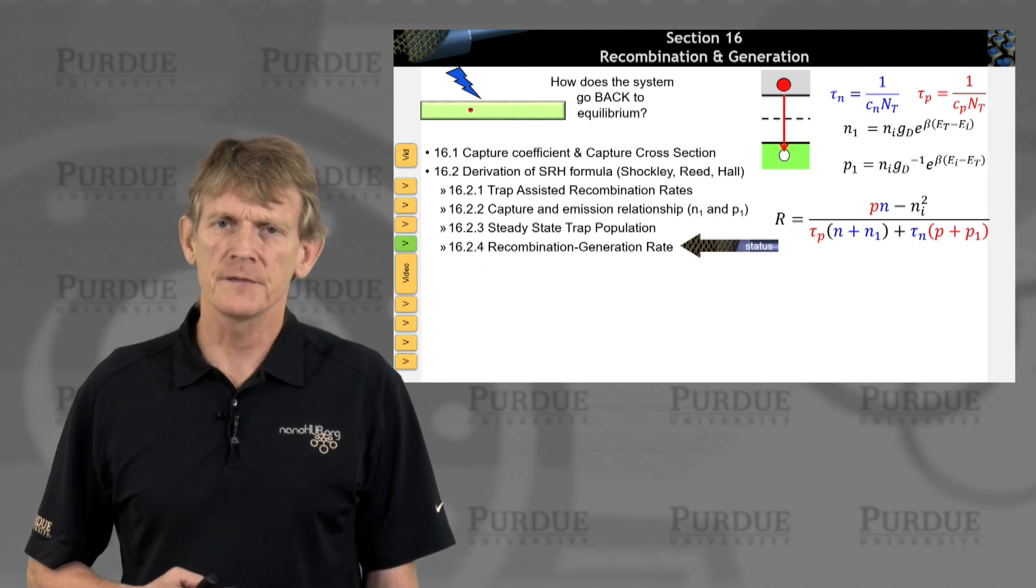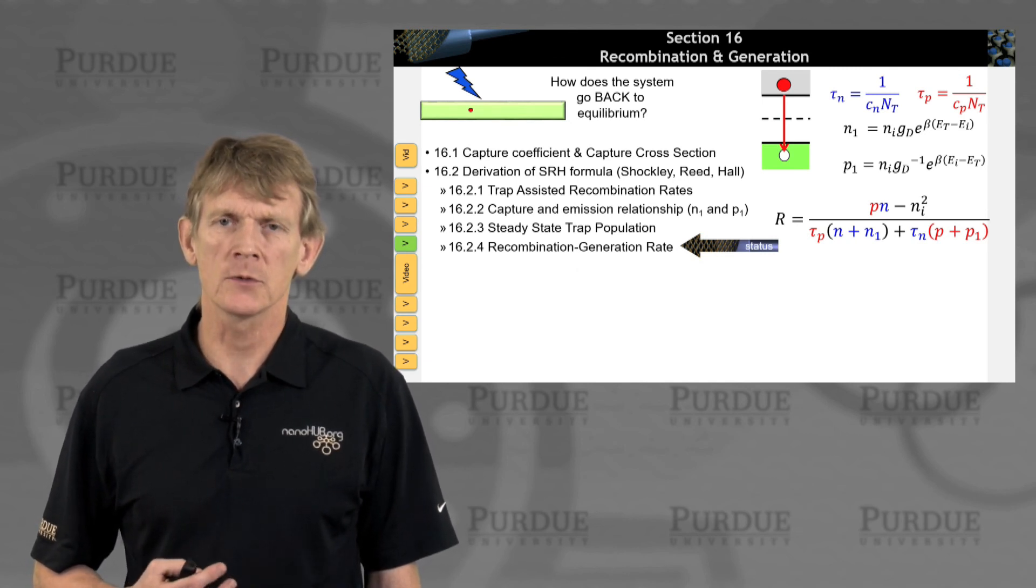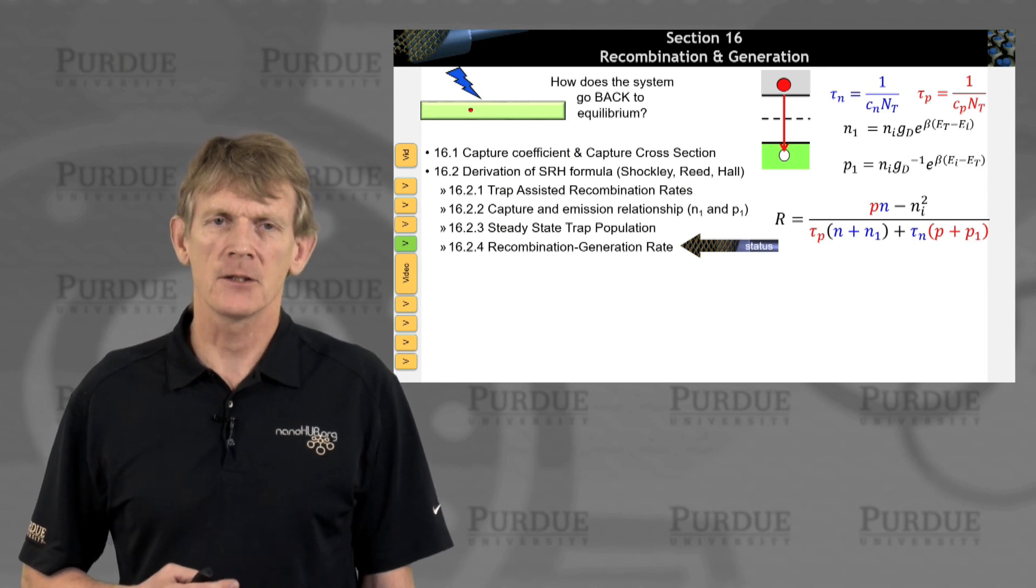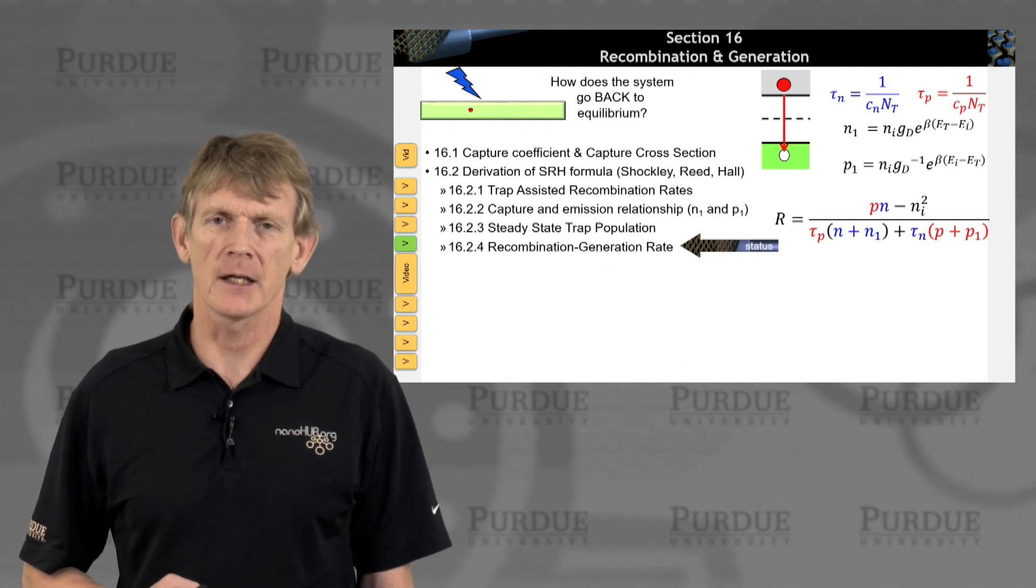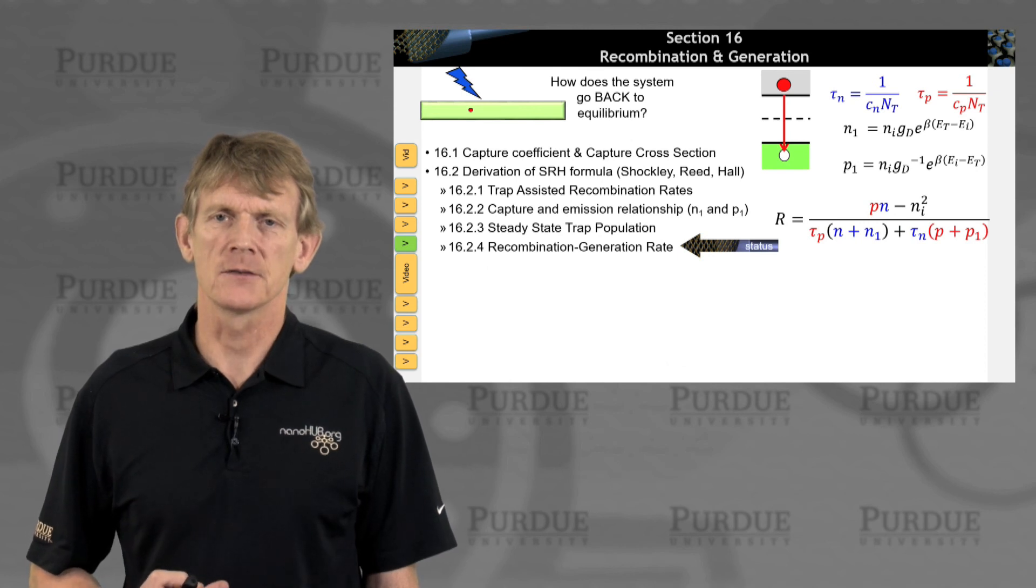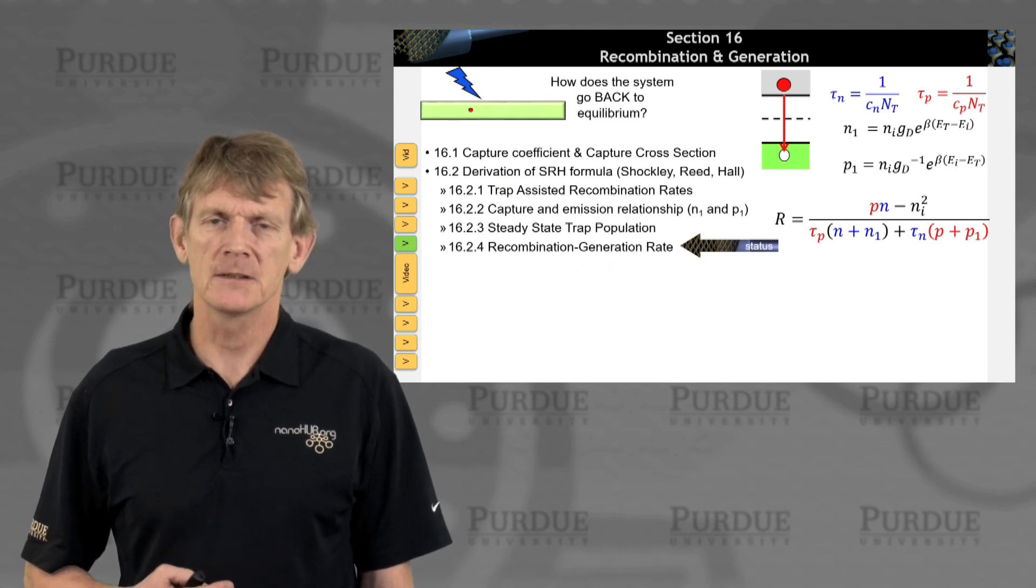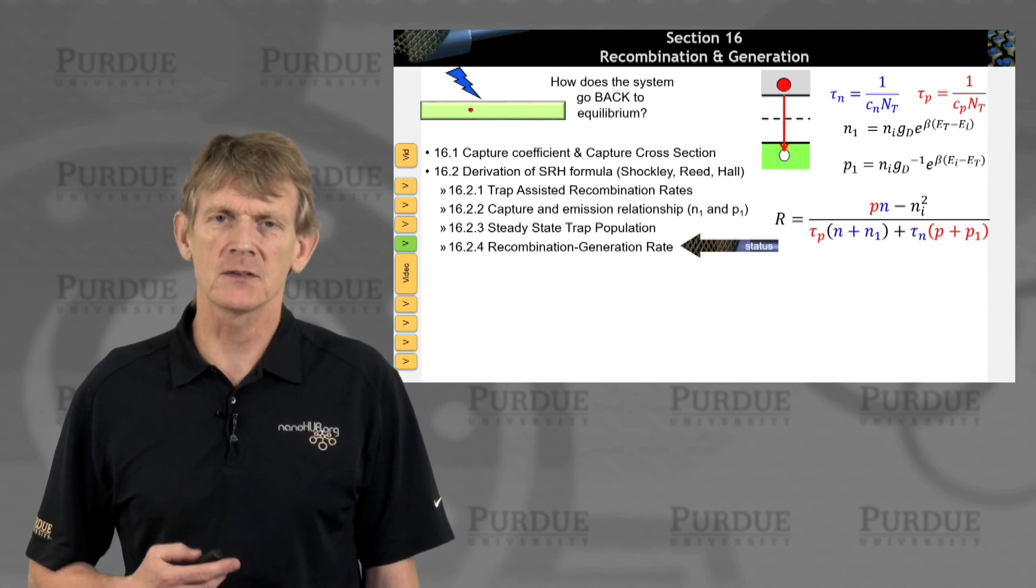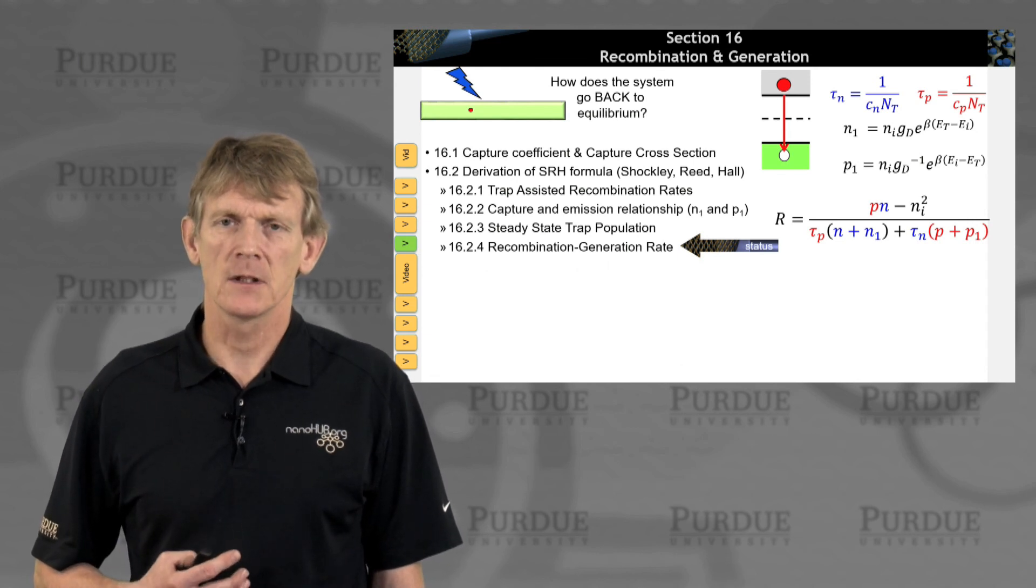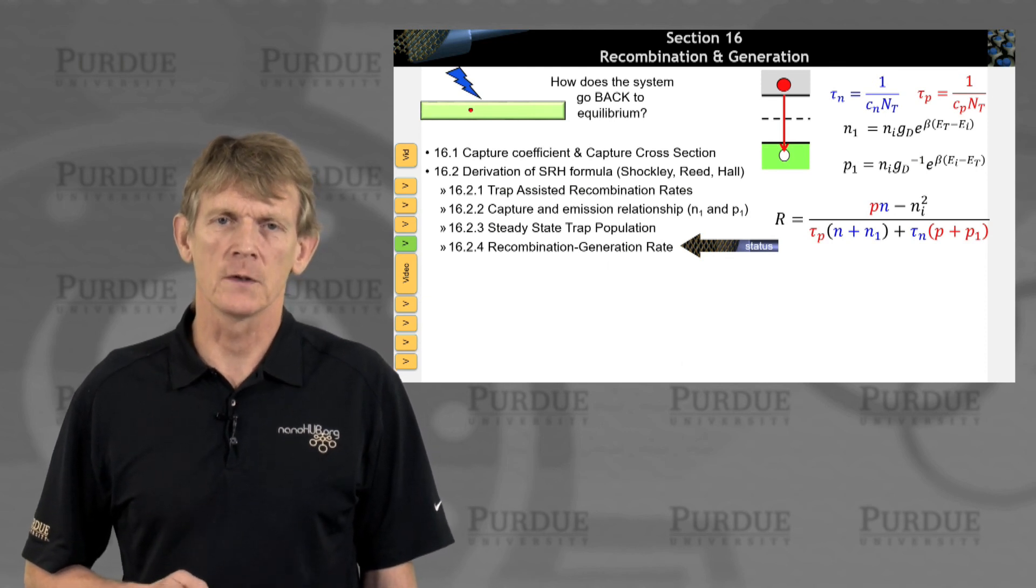Now, what if you had fewer than equilibrium electrons and holes? So Pn is smaller than Ni squared. This whole term could become negative. So then you will have generation. You will have a system of traps that will drive the system back to equilibrium through generation of carriers until R is zero. And if R is greater than zero, P times N is larger than Ni squared, it'll drive the system back to equilibrium. Alright? So this rate R is sort of an equilibrium restoring process. It drives the system towards equilibrium.